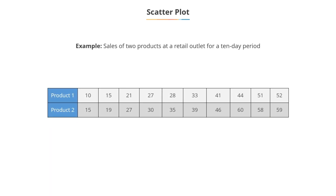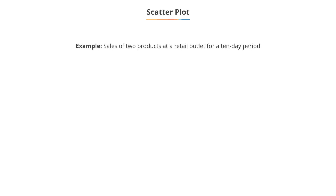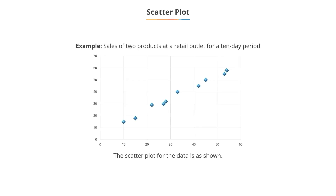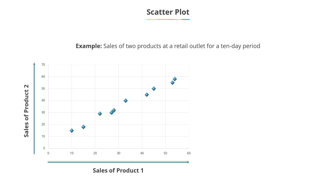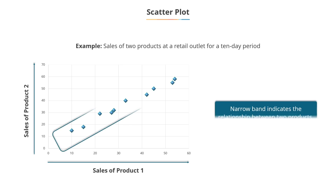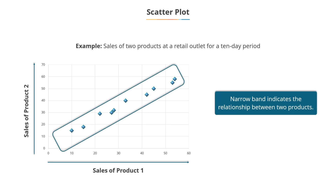The following data represents the sales of two products at a retail outlet over a 10-day period. The scatter plot chart for the above data is as follows. In the chart, values of sales for the first product are shown in the x-axis while values of sales for the second product are shown in the y-axis. A narrow band within which plotted values fall is indicative of a relationship between the two variables, that is, sales of the two products on various days.